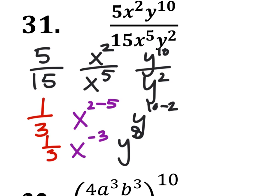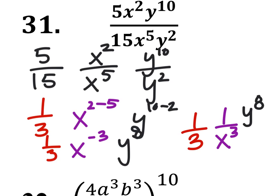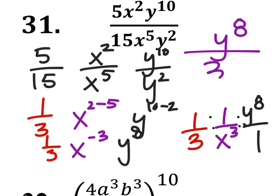so we'll change this just a little bit. We've got 1 third — that would be 1 over x cubed — and then y to the power of 8. You could make it over 1 just so you could multiply the fractions. Then 1 times 1 times y to the power of 8 is y to the power of 8 over 3 times x cubed.